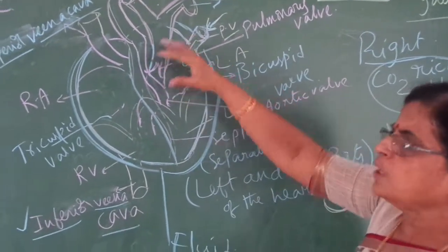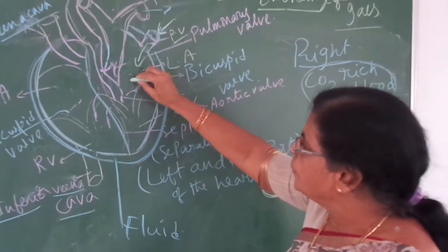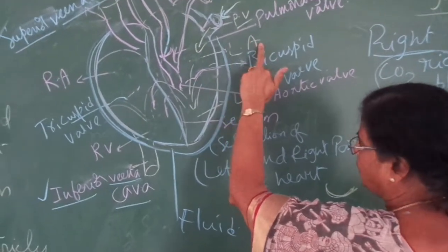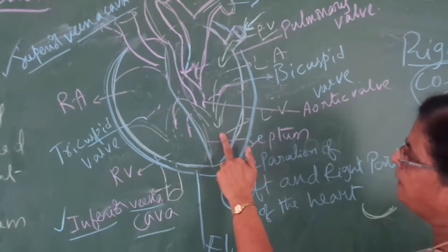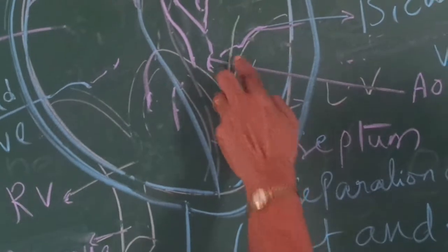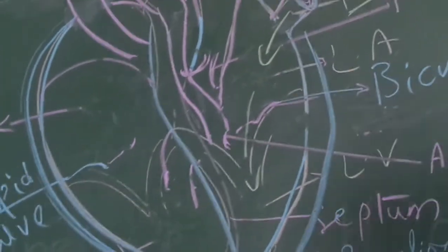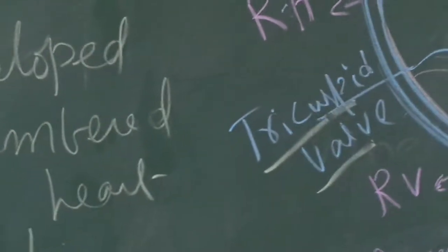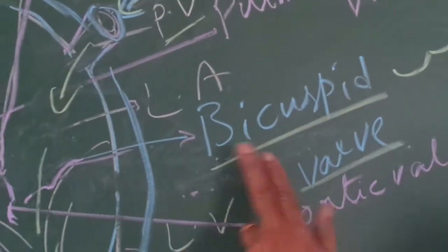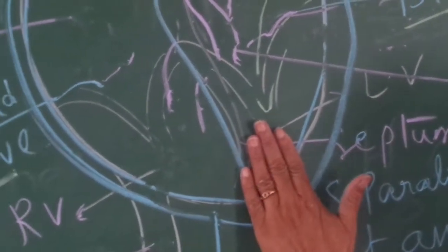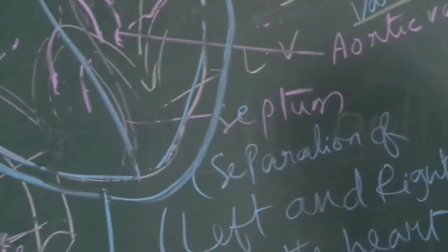First the atria contract and the blood moves into the ventricle. From the left atrium, the blood moves into the left ventricle. Once this ventricle contracts, the blood could go back, but it does not — because there is a bicuspid valve. On the right side there is the tricuspid valve; on the left side there is the bicuspid valve. The bicuspid valve closes and prevents blood from going back into the left atrium.